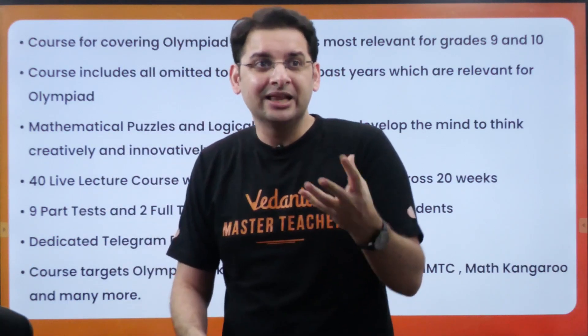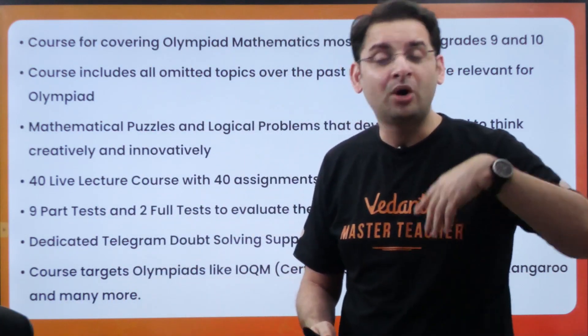The course includes all the omitted topics from past years which are relevant for olympiads — and not only olympiads, they are also relevant for JEE. For example, recent years have seen a lot of syllabus cuts: the Euclidean Division Lemma, which is at the heart of the number system, was omitted. The Angle Bisector Theorem was also omitted. These are topics that require higher-order thinking and they have been omitted from the NCERT syllabus over the last five to ten years, making things easier for students and giving them false confidence when they score well in school mathematics.